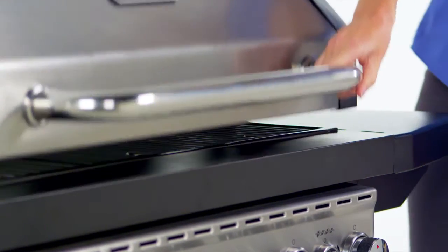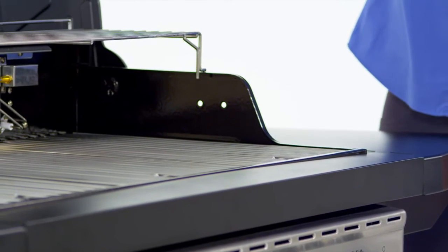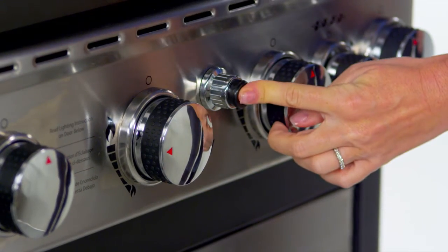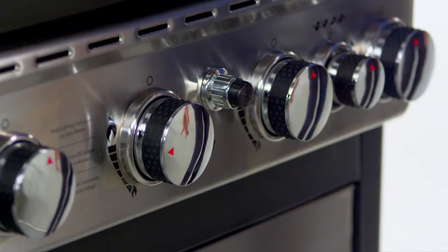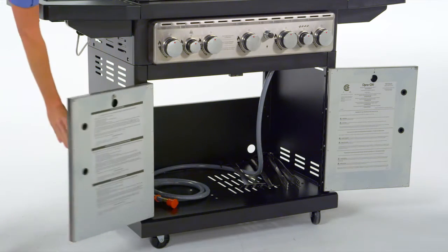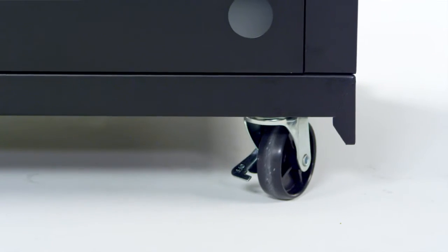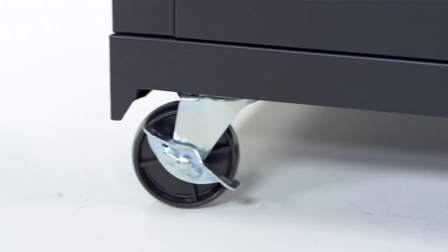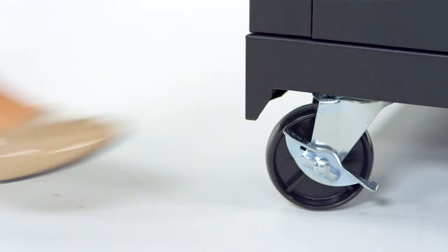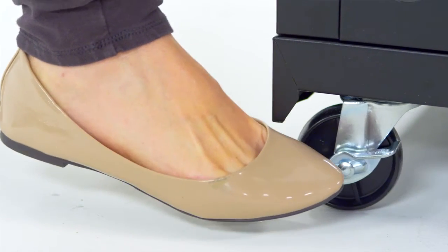This grill is made for ease of use with an easy lift wide grip handle, a push button Dyna-Pulse electronic ignition system, an enclosed cabinet with two stainless steel double wall doors, four heavy-duty casters for relocating the grill before and after use, including locking casters to keep the grill in place during use.